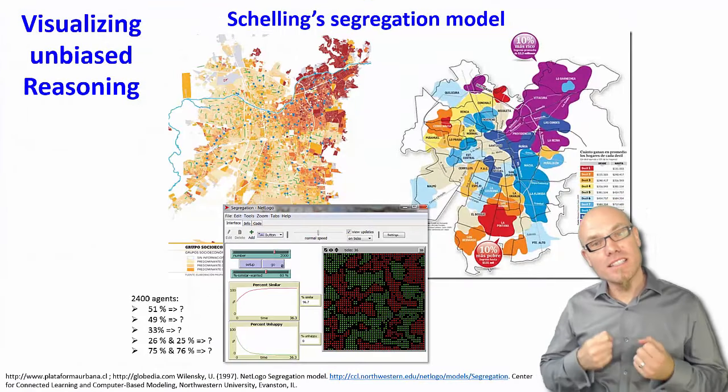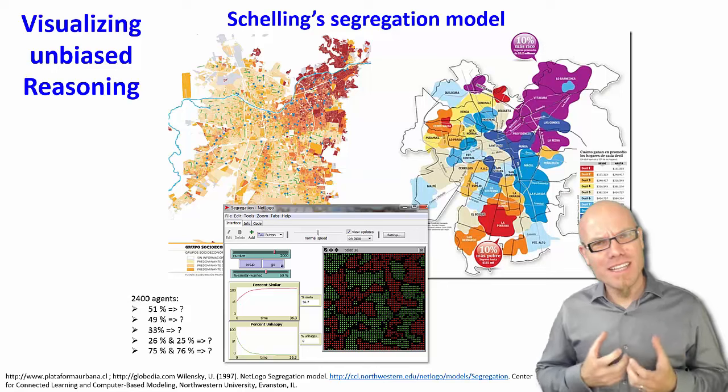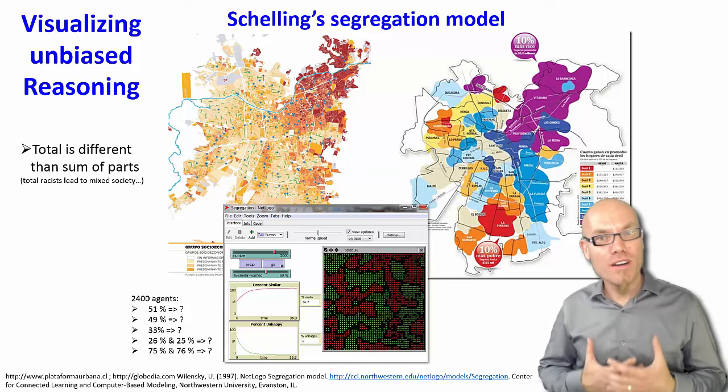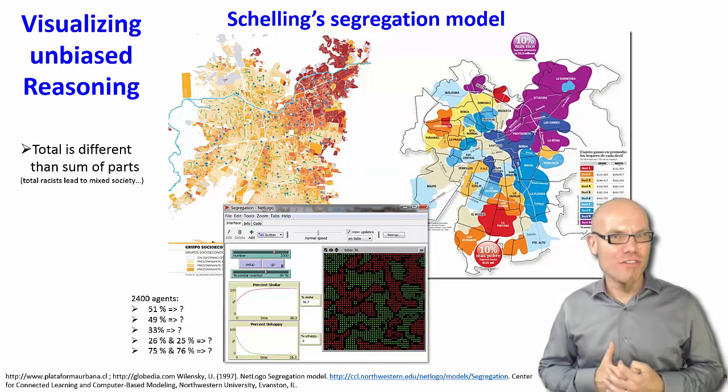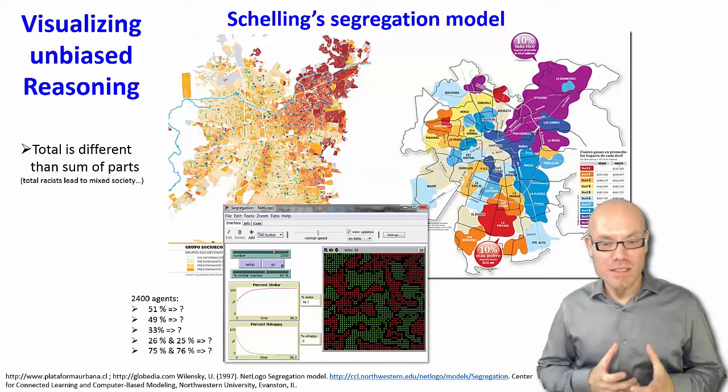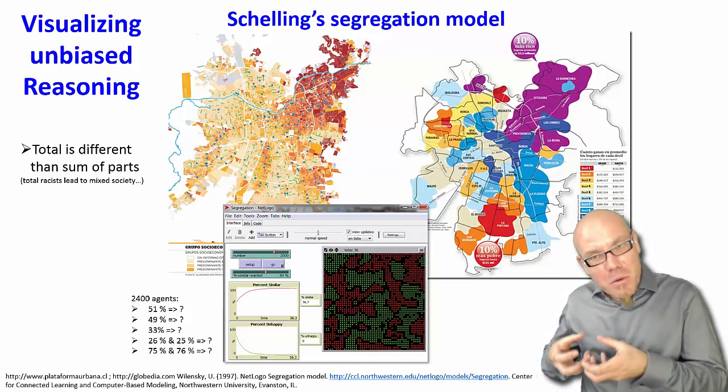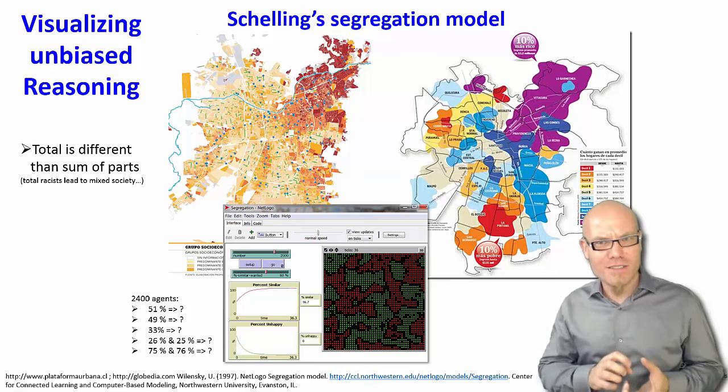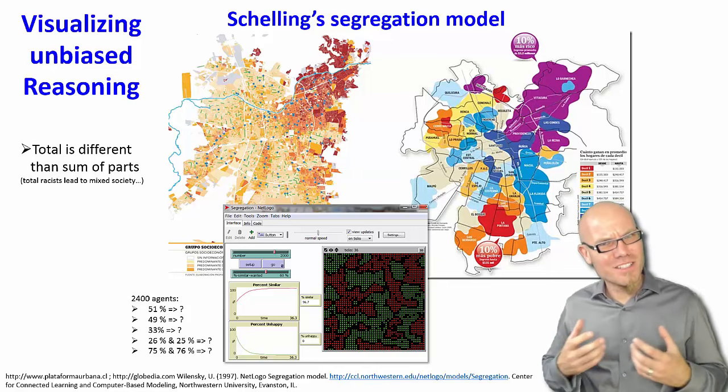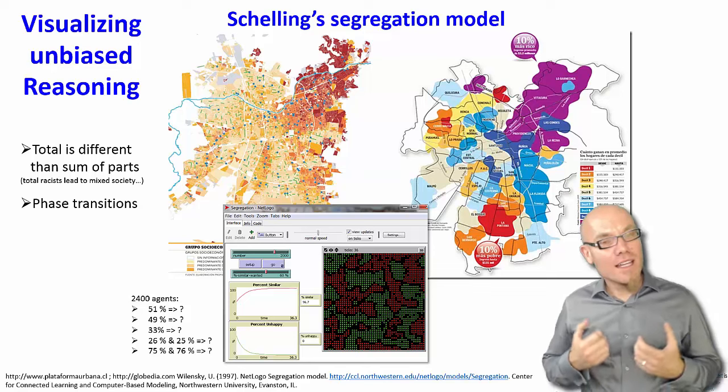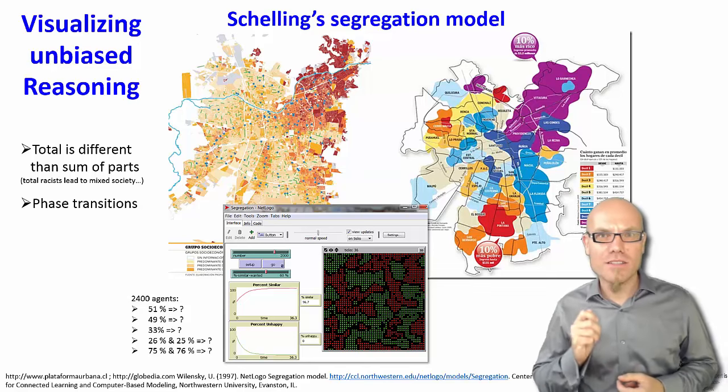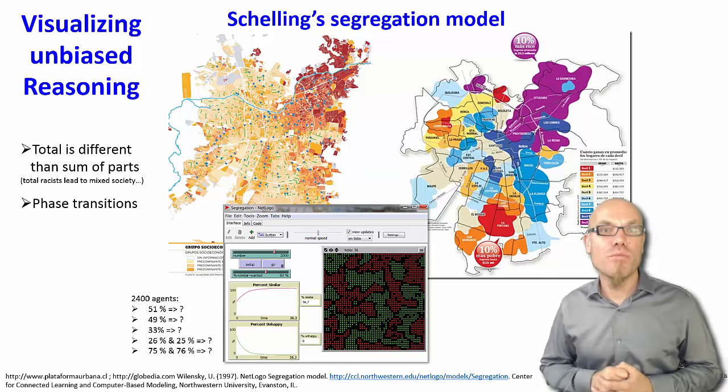This formal model gives us interesting insights that help us understand aspects where our human intuition, our human reasoning often fails. For example, that the total is different, and it's actually more than the sum of its parts. This is often called emergence. The total is different and more than the sum of its parts. For example, a bunch of actually quite tolerant people ended up in a very segregated society, and a bunch of extreme racists ended up in a mixed society. Our human intuition is not very good at detecting these kind of things. The formal model allowed us to detect these phase transitions.